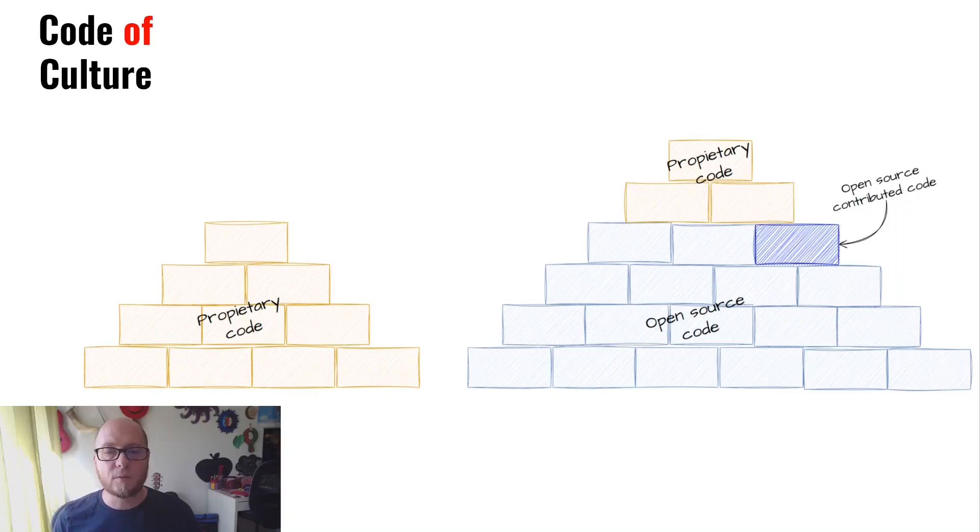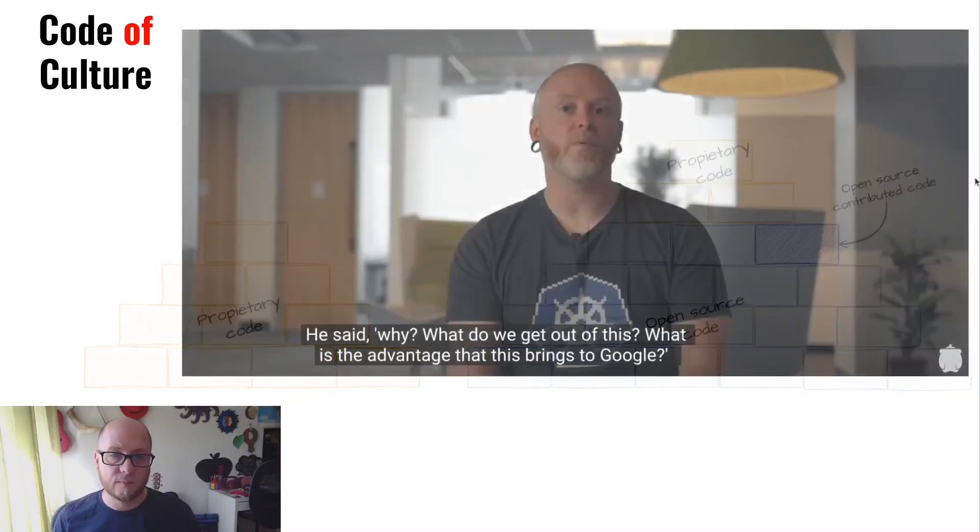But why would a private company want to make this code open source? Actually, companies like Google ask this every day. Tim Hockin, one of the creators of Kubernetes, in the documentary about Kubernetes that's available on YouTube, tells the story that when they proposed to the CEO of Google to open source Kubernetes, the question that he raised was, why? What do we get out from this? And this is the current conflict about capitalism and open source. It must give back something to the company that invests in it.